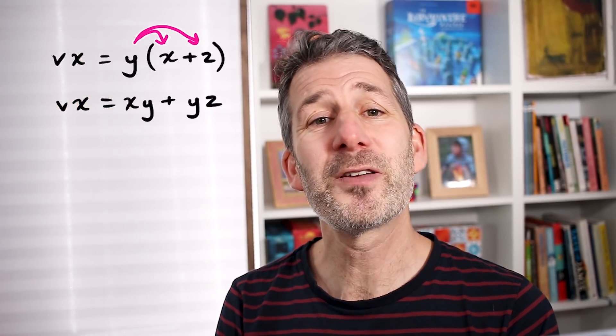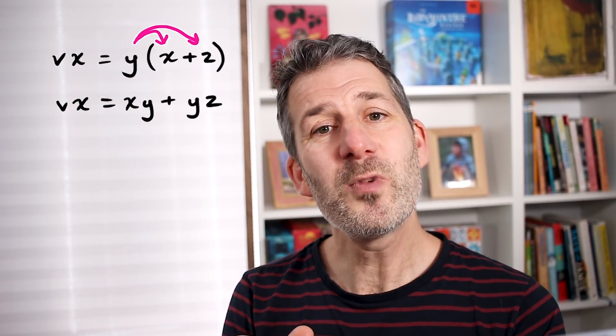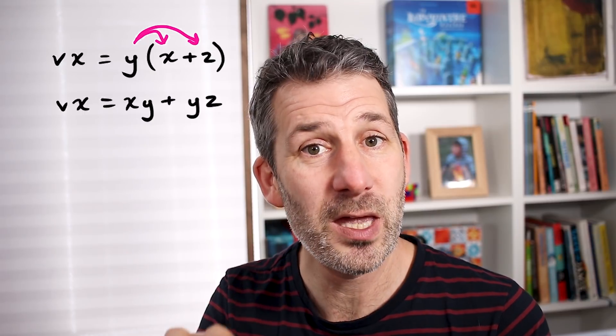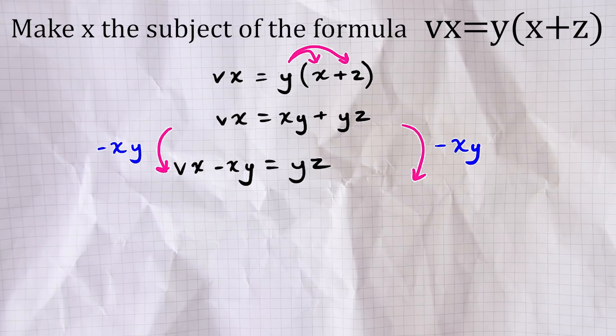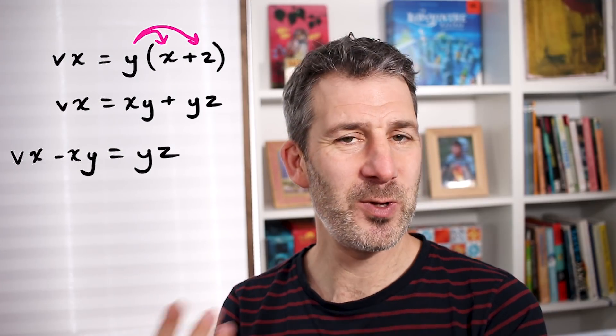Now we have no brackets but the problem we still have is that the X appears twice. So let's first of all at least get them all on their own on the same side of the equation and we can do that by subtracting XY from both sides. Now we have VX minus XY equals YZ. It's definitely an improvement but our aim is just to get one X on its own. So how do we do that?